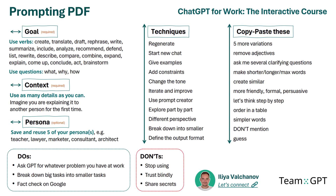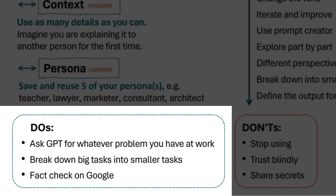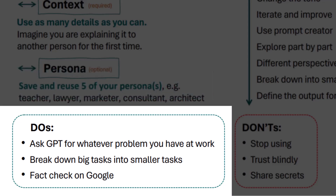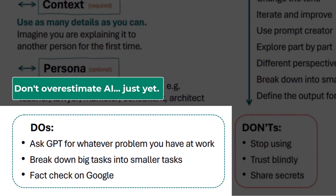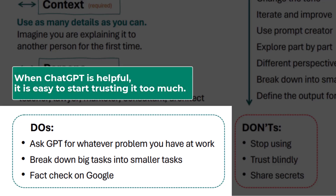These are general rules you should follow. Do this often — ask GPT for whatever problem you have at work. This is how you will learn, by interacting. Number two: when in doubt, break down big tasks into smaller tasks. Don't overestimate the AI just yet. Number three: often fact-check on Google. It is easy to start trusting ChatGPT a bit too much, and this is when you're going to get in trouble.